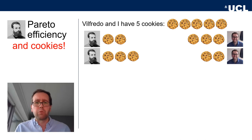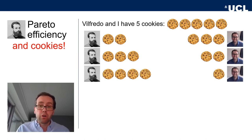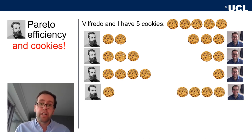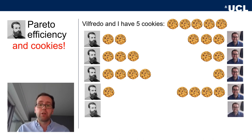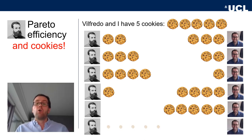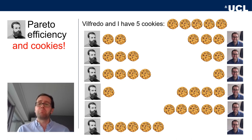Wilfredo getting four cookies and me getting one is also Pareto efficient — very nice for Wilfredo. Me getting four and Wilfredo one is Pareto efficient. Me getting all five and Wilfredo getting none is Pareto efficient. Or Wilfredo getting all the cookies and poor Roland getting none at all is also a Pareto efficient allocation — and probably Wilfredo Pareto's preferred allocation.